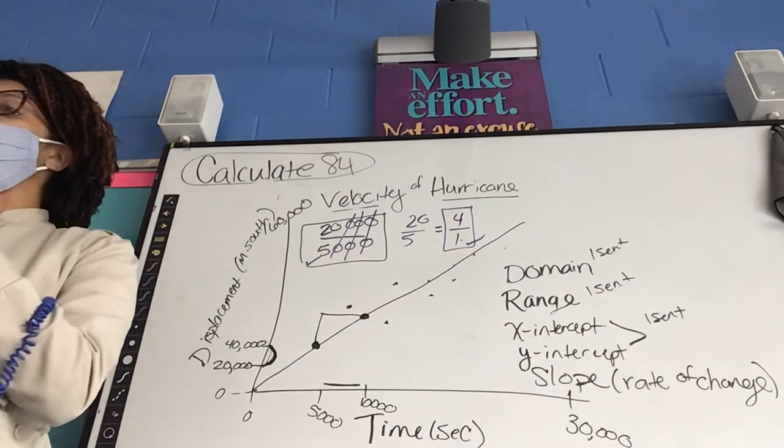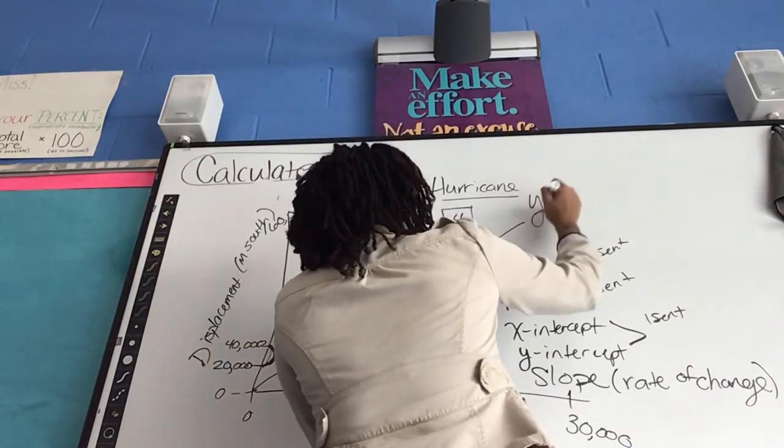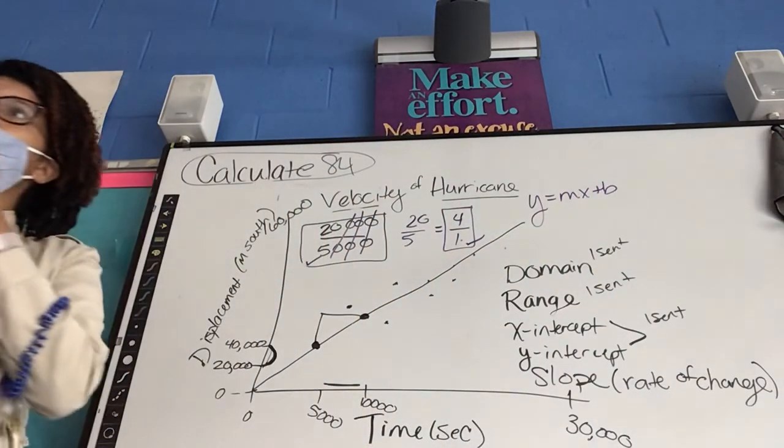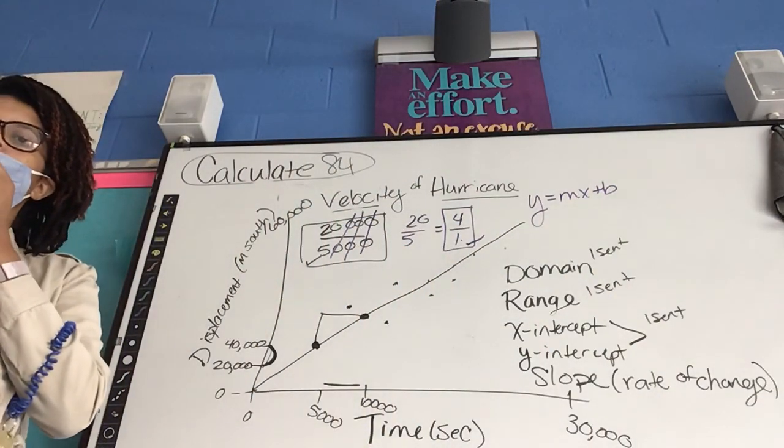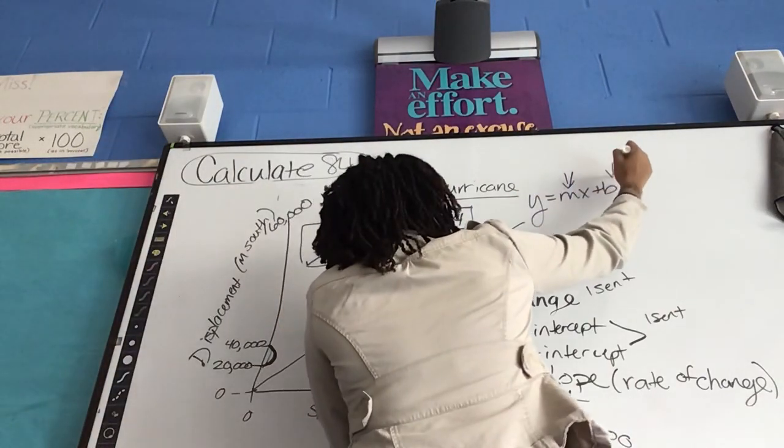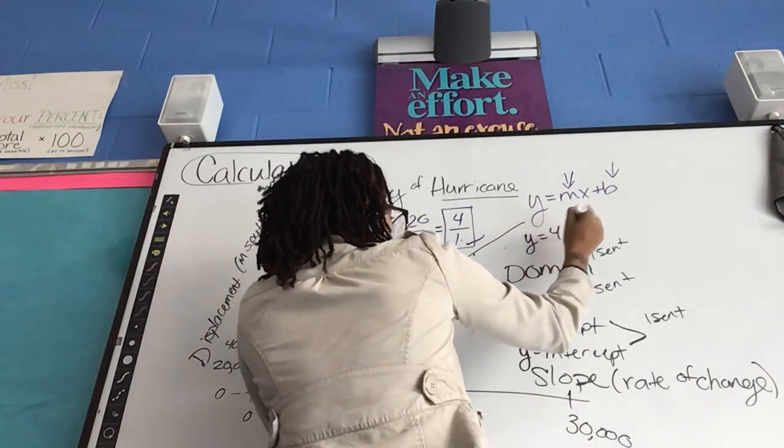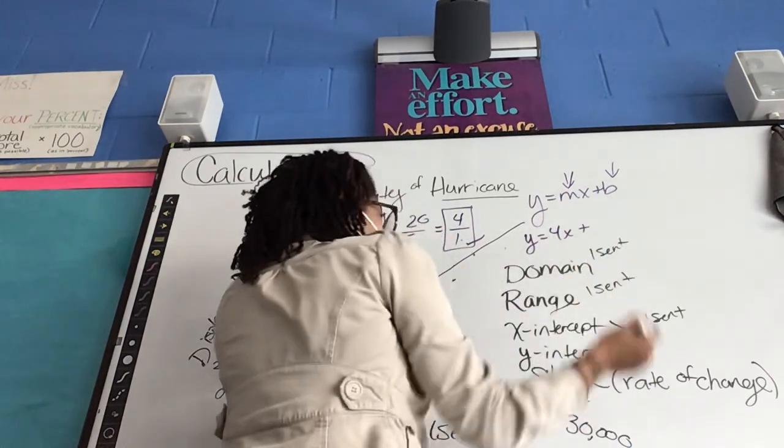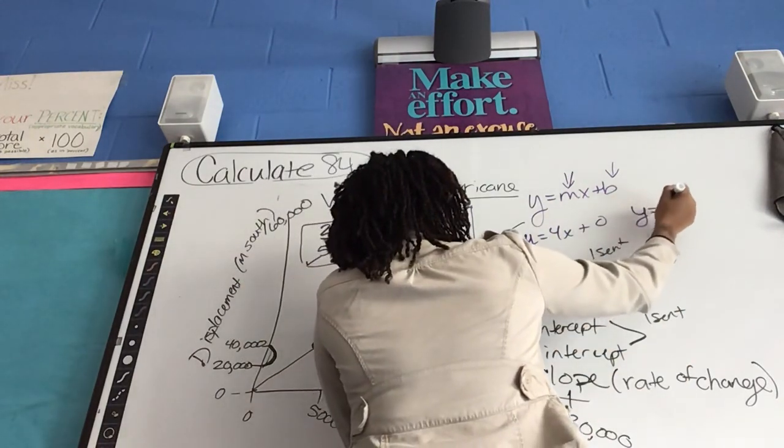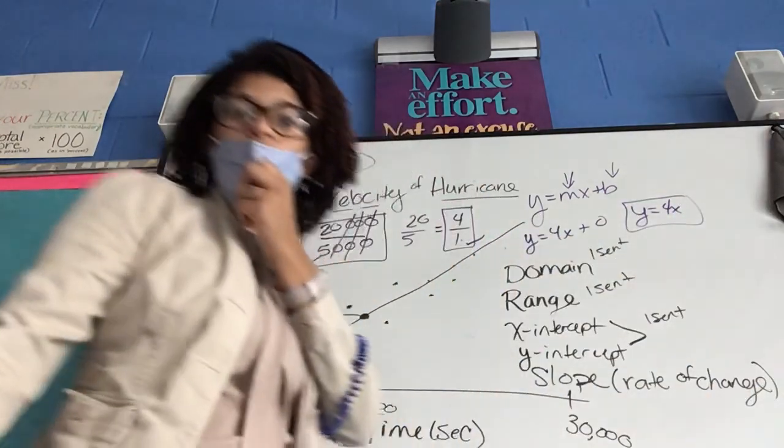Now for this assignment, there's no equation on there. For your project, you will have to write the equation. Hopefully everybody remembers that, slope intercept form. And you substitute in for the slope and the y-intercept. My slope here is 4, or 4 over 1. My y-intercept is 0. So my equation is just y equals 4x.